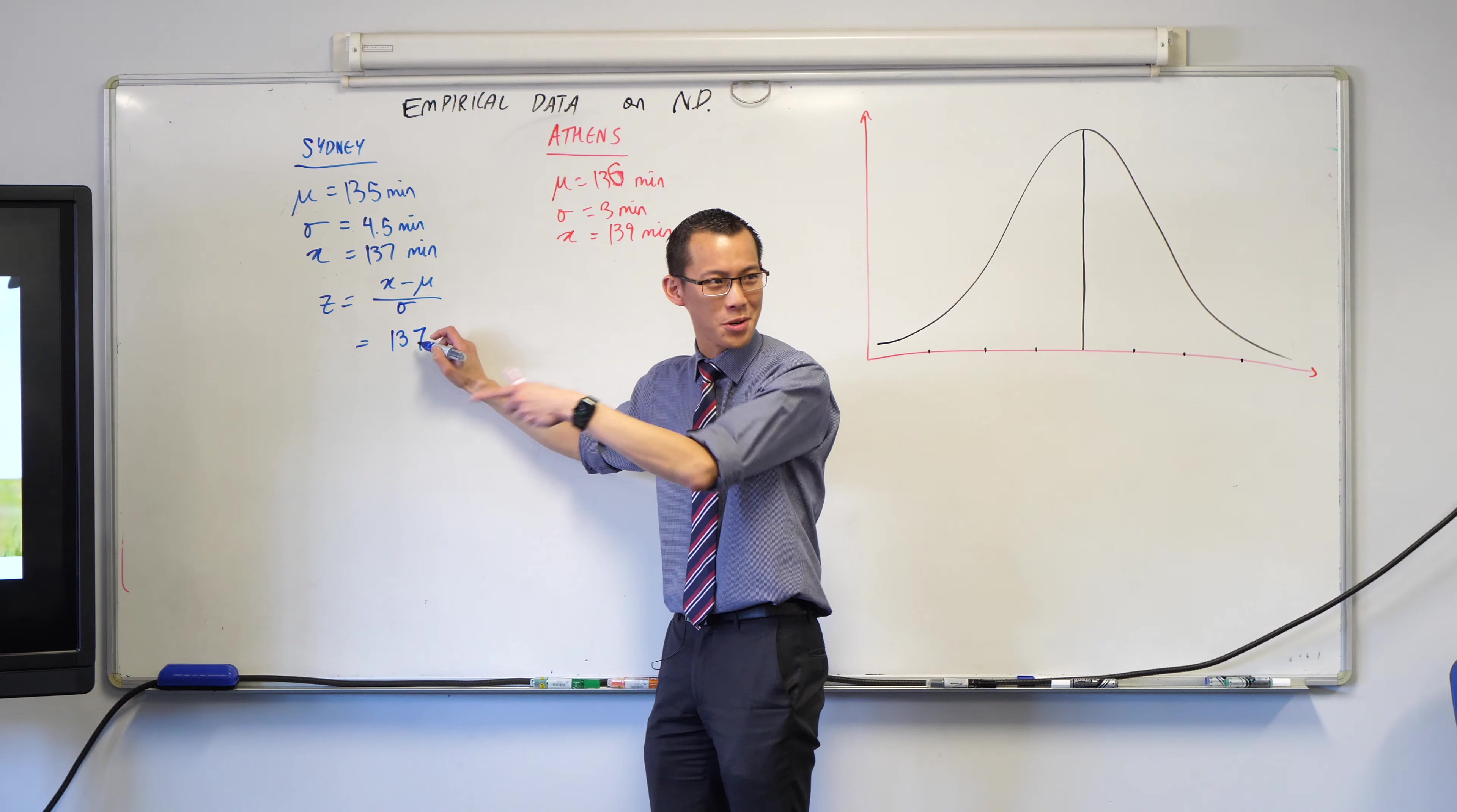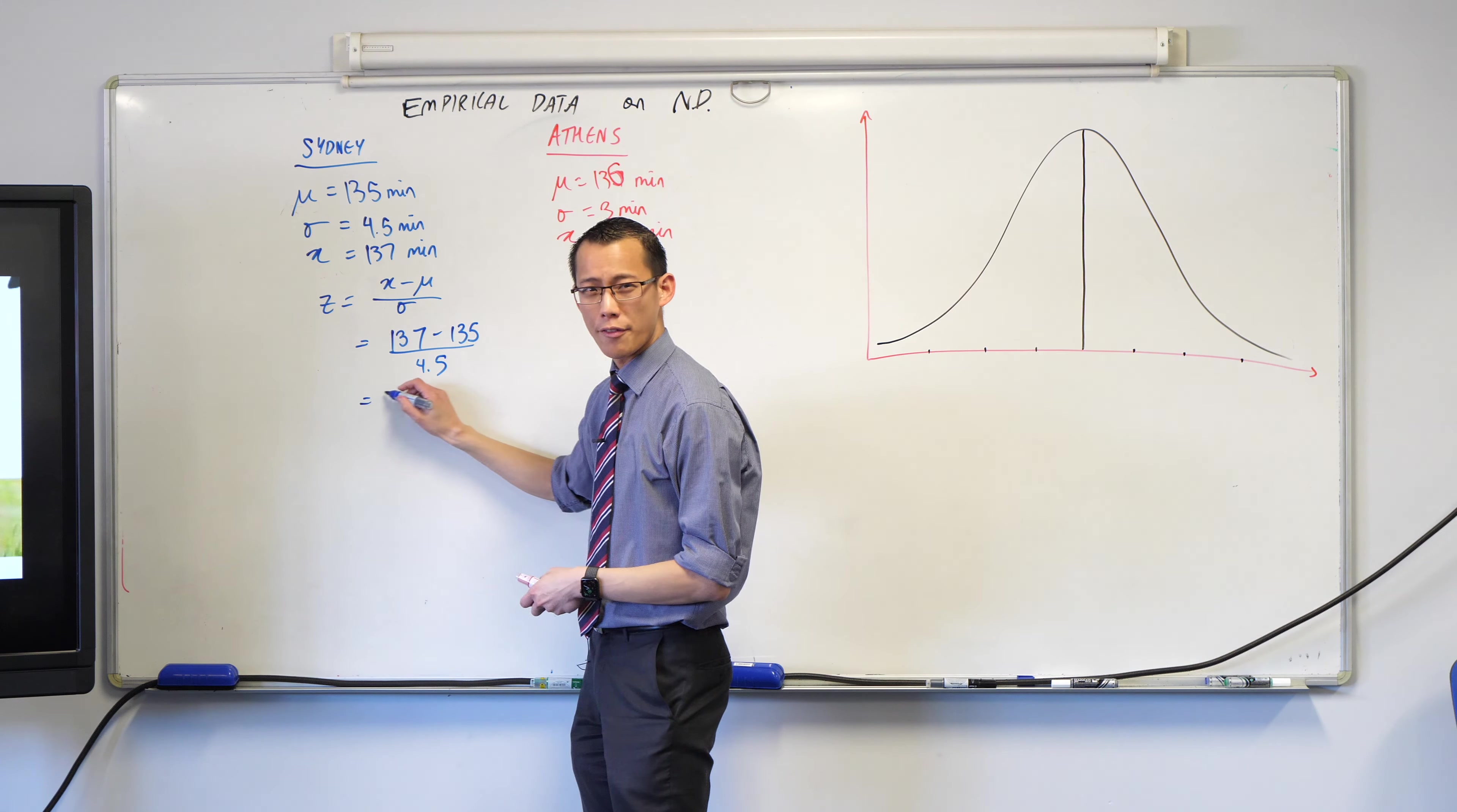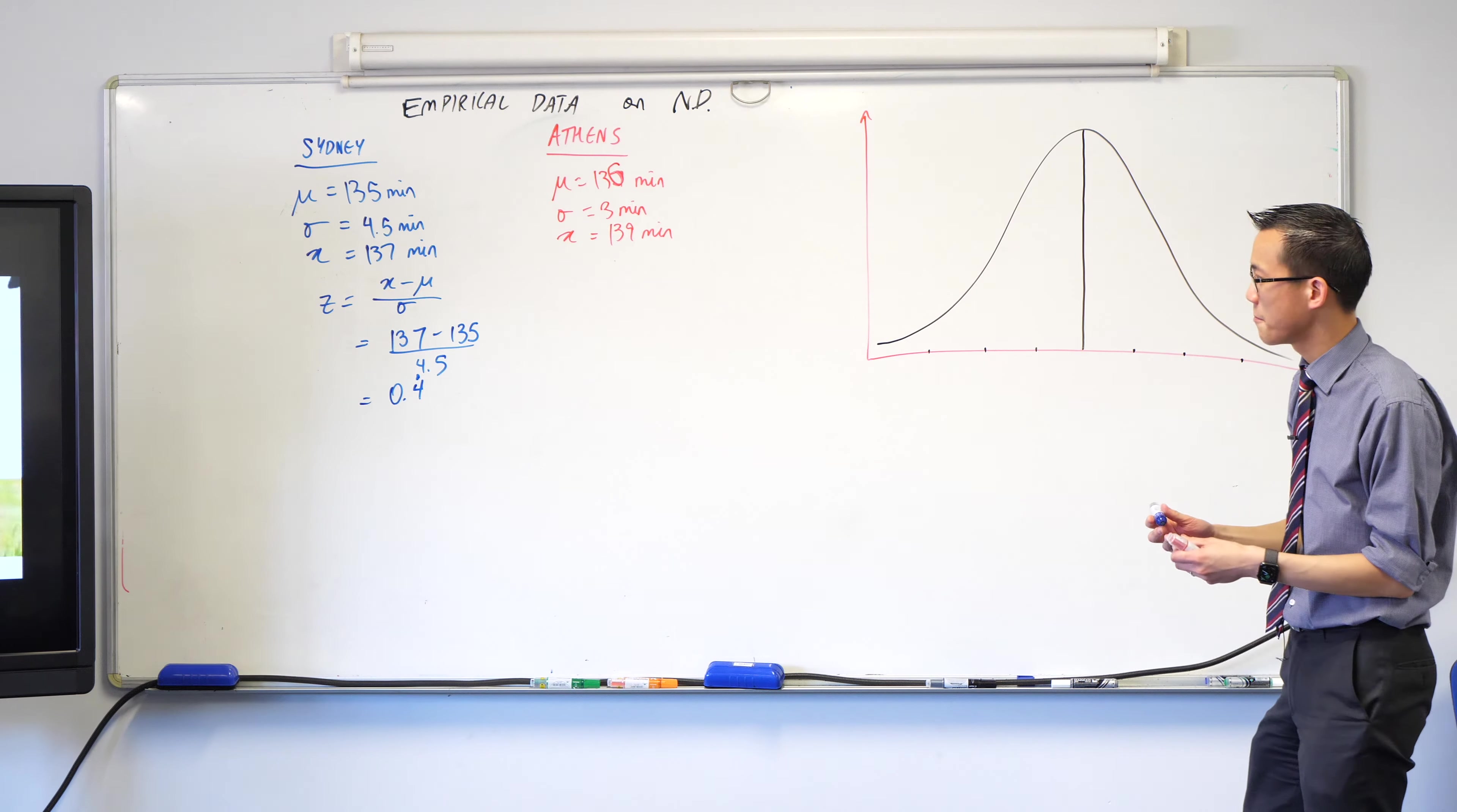Let's crunch the numbers. 137 minus 135, all divided by 4.5. That's 0.4 repeating, or 4 over 9. That's good.